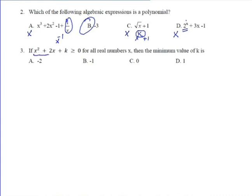If x squared plus 2x plus k is greater than or equal to 0 for all real numbers x, this will be true for some k values. We ask for the minimum k value that satisfies this inequality.